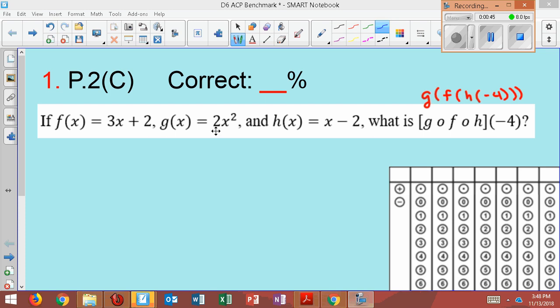Start with your g. g's equation is 2x squared. Underneath it, I'm going to write the next letter, f. I'm going to put f down, which is 3x plus 2. And underneath f, I'm going to put the h. And h's equation is x minus 2.